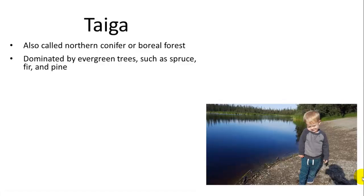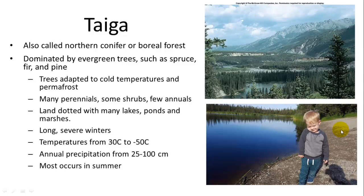The taiga, also called the northern conifer or boreal forest, is just lower than the tundra in latitude and is dominated by evergreen trees — you can see here a bunch of spruce trees. These trees are adapted to cold temperatures, such as spruce, fir, and pine. They can grow on some levels of permafrost as long as it's not too close to the surface. There are lots of perennials and shrubs and a few annuals, but because the growing season is so short, annuals aren't as persistent as other types of plants.